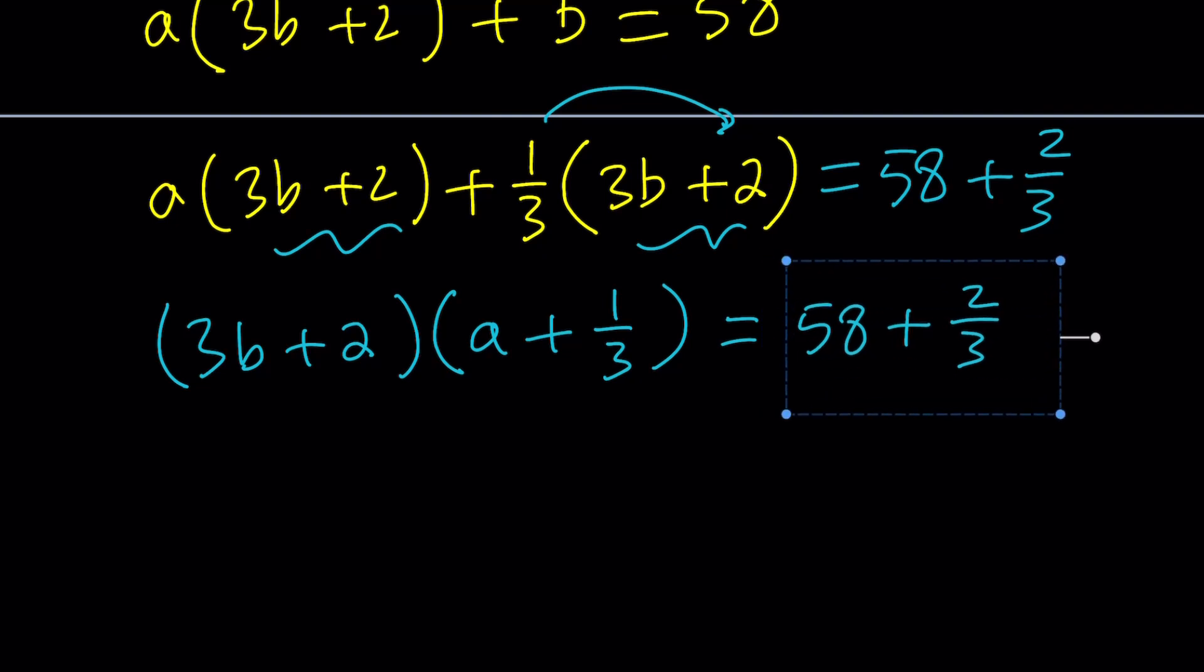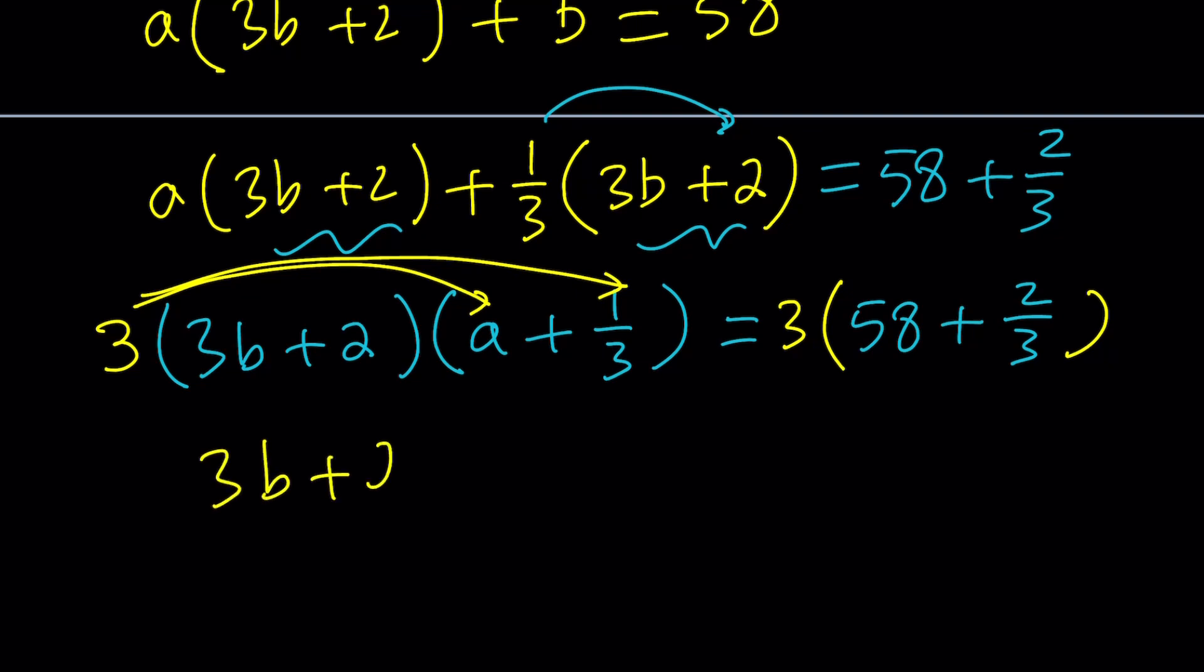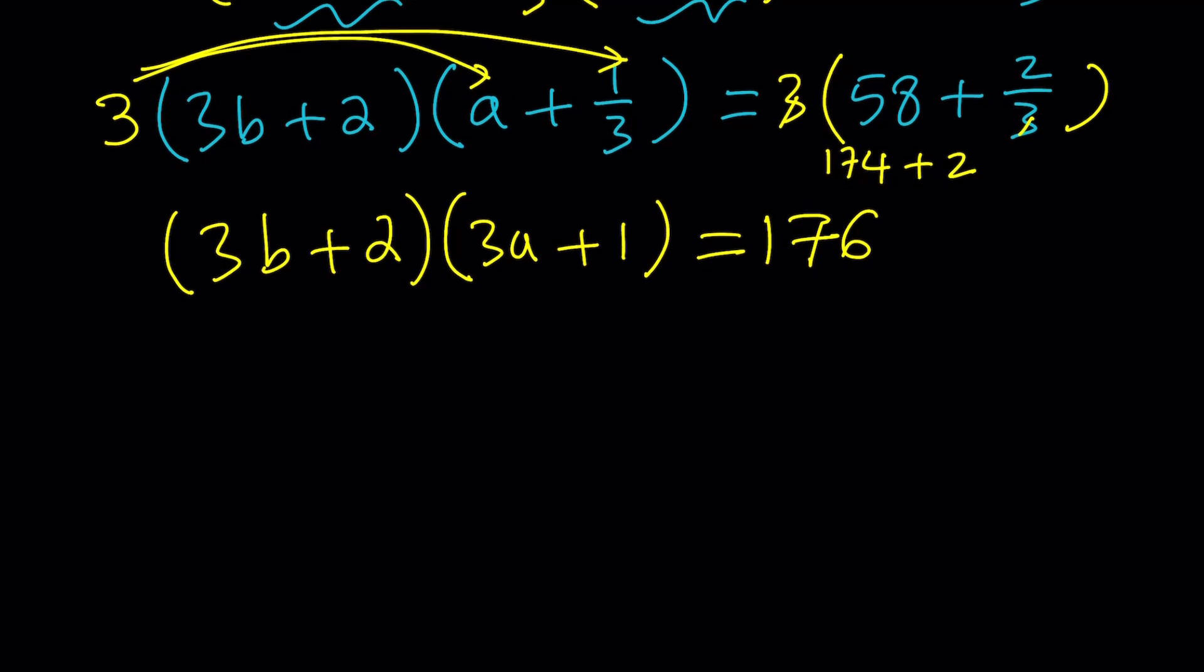To take care of the fractions here, and kind of to get something parallel to 3b plus 2, I want to multiply both sides by 3. But the way I multiply by 3 is as follows. I'm not going to distribute the 3 over the 3b plus 2, but rather here. Make sense? Because my goal is to get rid of the fractions. So, it's going to give me 3b plus 2 times, 3 times a plus one-third is going to be 3a plus 1. And on the right-hand side, if I distribute the 3, I'm getting 3 times 58, which is 174 plus, the 3s are going to cancel out, so that's going to give me plus 2, so that's going to be 176. Make sense? I hope it does.